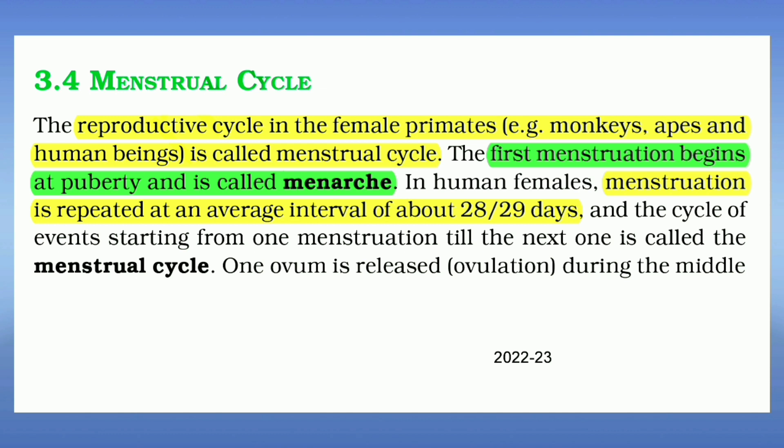The reproductive cycle in female primates — monkeys, apes, and human beings — is called the menstrual cycle. First menstruation begins at puberty and is called menarche. Menstruation is repeated at an average interval of 28 to 29 days.